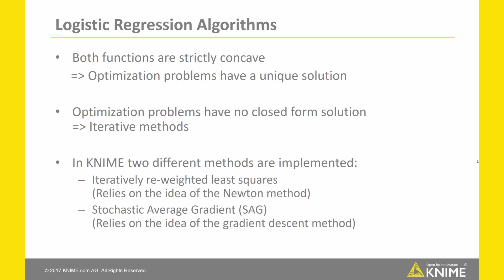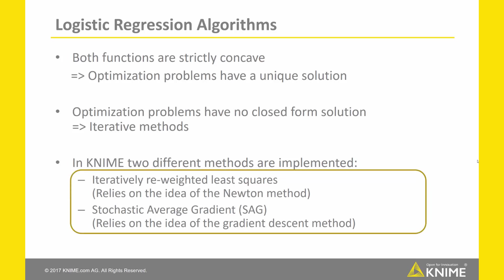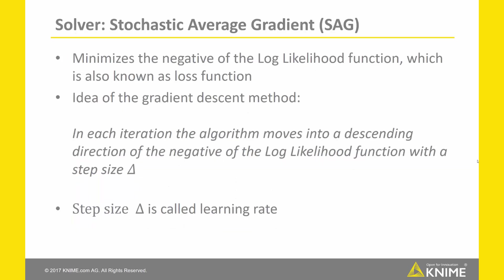In KNIME Analytics Platform, two different methods are implemented: the iteratively re-weighted least-squares algorithm and the stochastic average gradient method. The iteratively re-weighted least-squares method relies on the Newton method. The stochastic average gradient method, on the other hand, relies on the idea of gradient descent and minimizes the negative of the log-likelihood function, also known as the loss function. In each iteration, the algorithm moves in a descending direction of the negative log-likelihood function, with a step size delta called the learning rate.